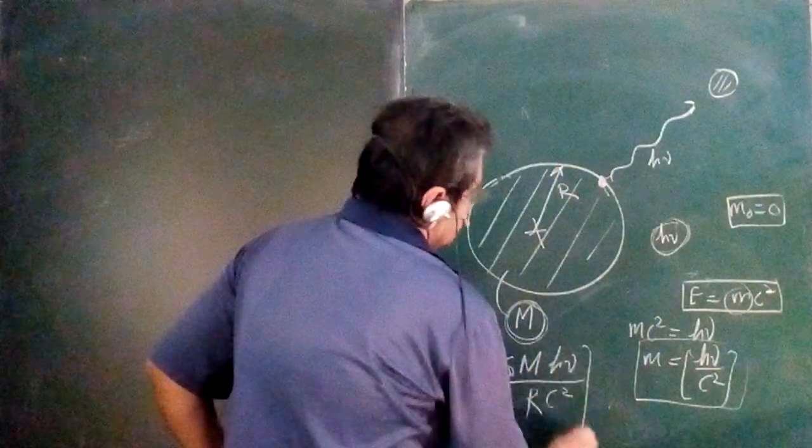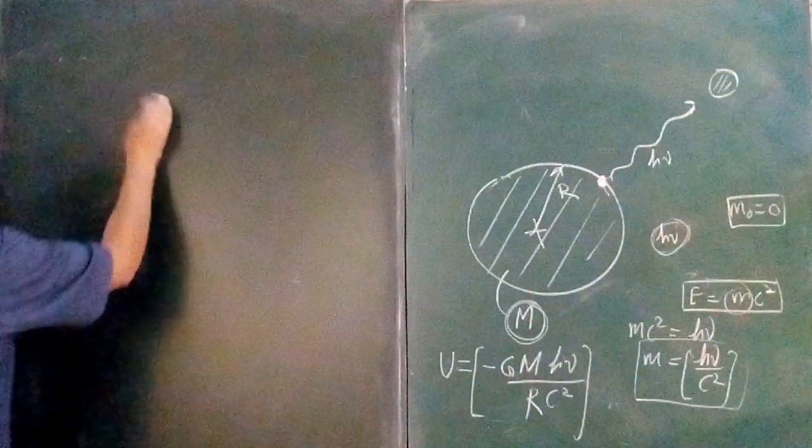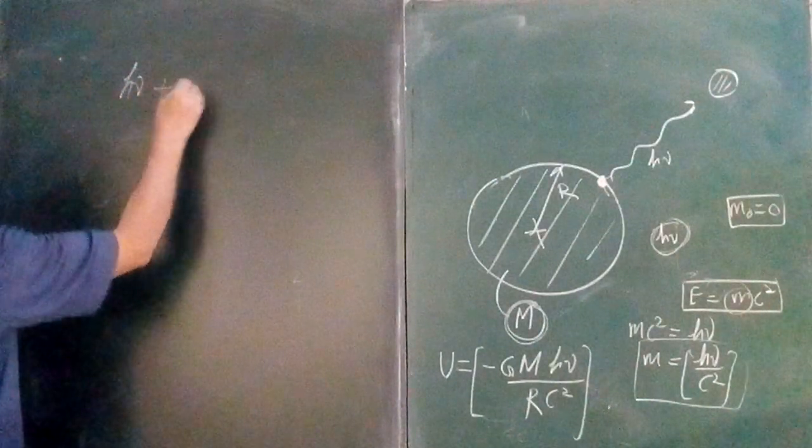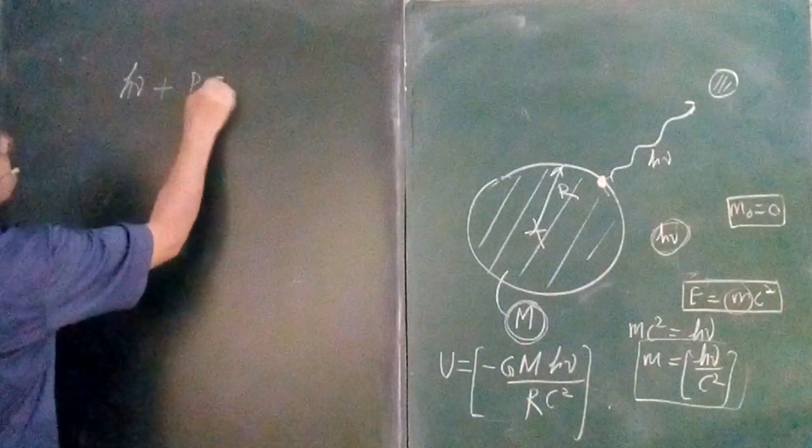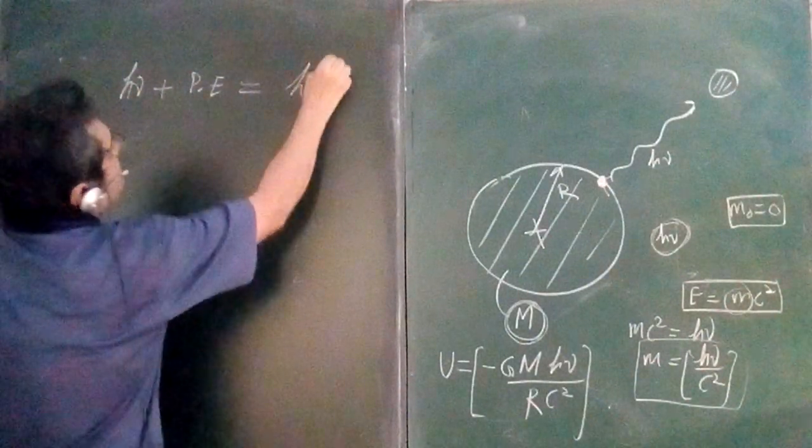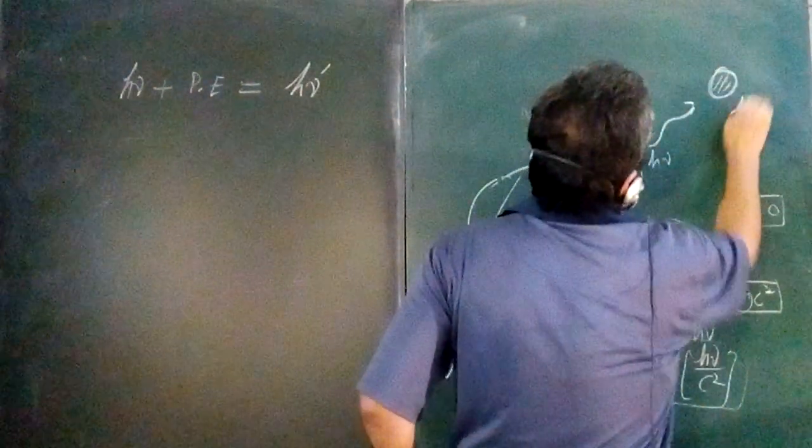So the energy here of the photon can be written as h nu plus the potential energy. And this energy has to remain same, so let be the final energy when I receive the photon.